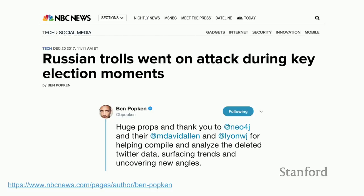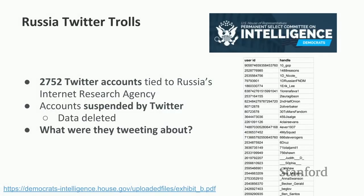This project started a few months ago working with NBC News, beginning with a list of Twitter accounts that Twitter provided to the House Intelligence Committee as part of their investigation into how Russia may have interfered in the 2016 presidential election. Twitter released almost 3,000 screen names of accounts they believed were connected to the Internet Research Agency — a company in Russia known to operate social media troll accounts.